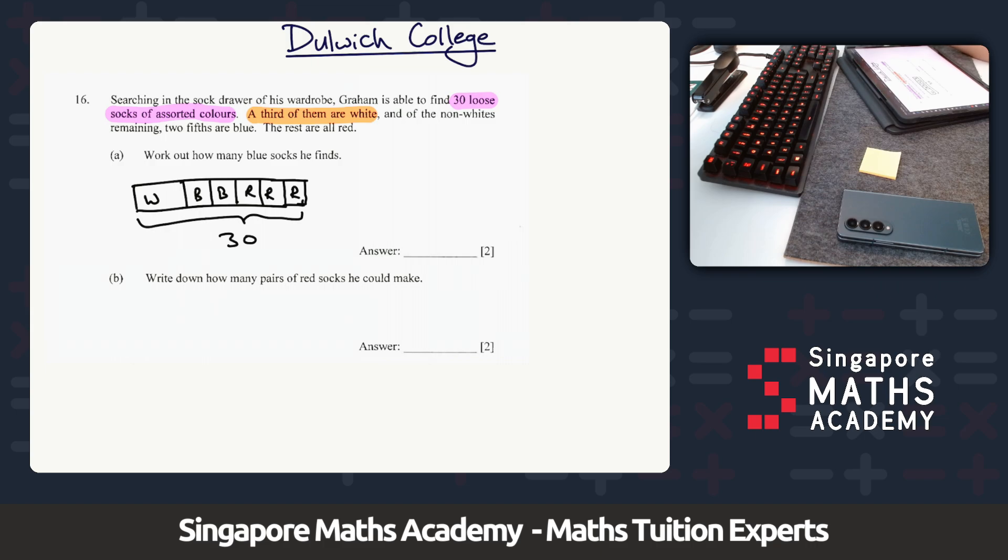Because it says a third of them are white, that must mean that I can work out a third of 30. A third of 30 is equal to 10. Because a third are white, the rest of them, 20 of them, are going to be non-whites. Two fifths are blue. How many blue socks does he find? Well, if two fifths of 20 are blue, 20 divided by 5 is 4, times 2 is 8. So there must be 8 socks that are blue.